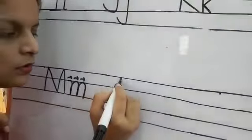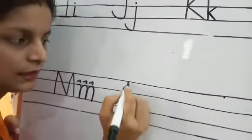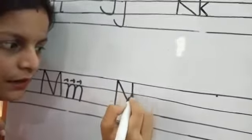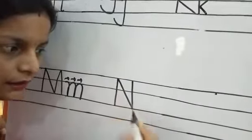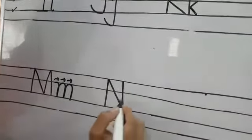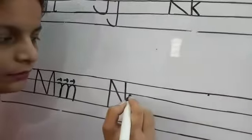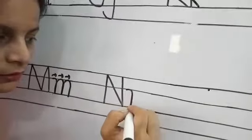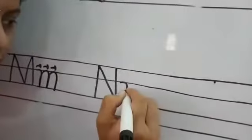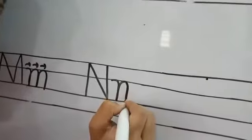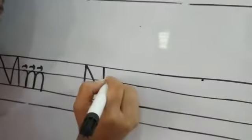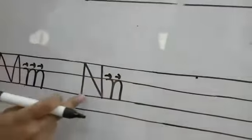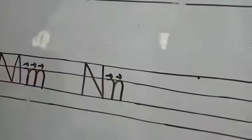N — nose. For capital N: one standing line, one slanting line, and again a standing line. For small letter N, take one turn and two turns. One and two. This is N — nose.